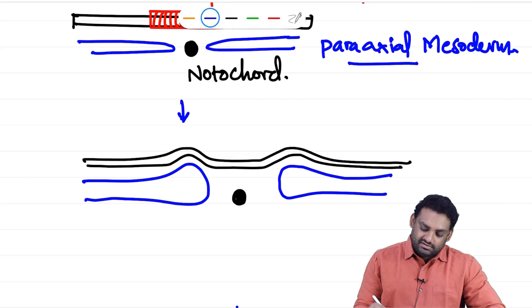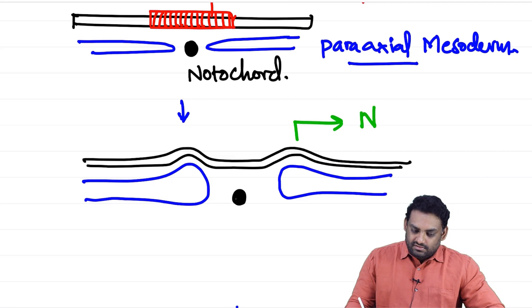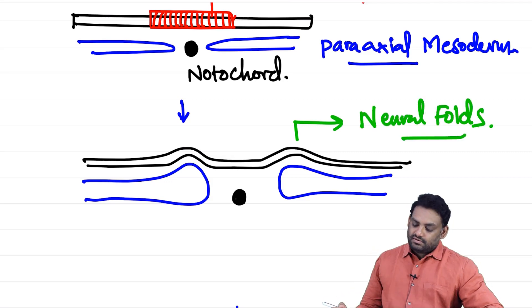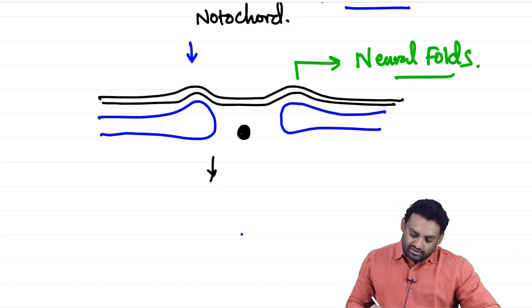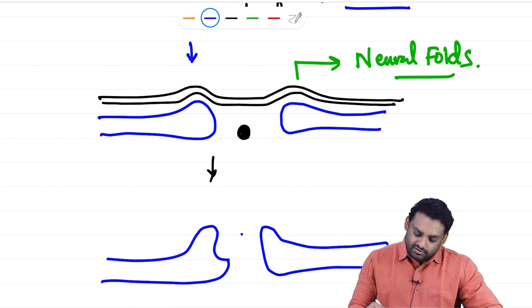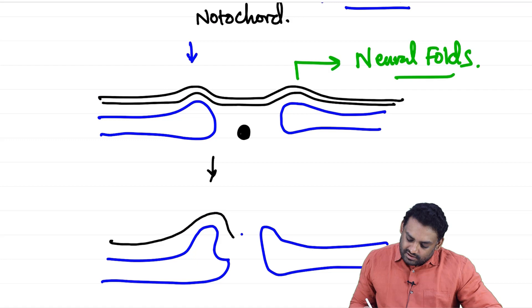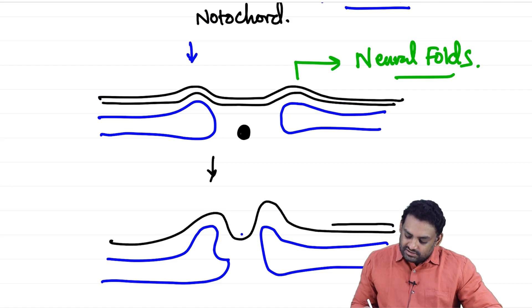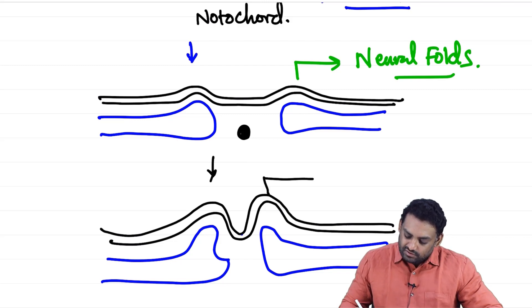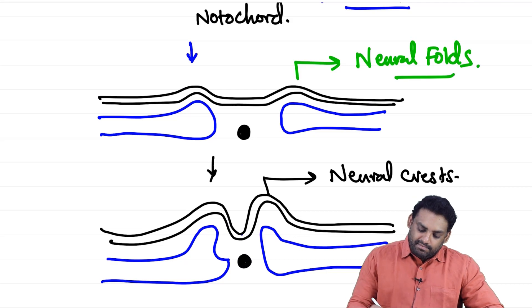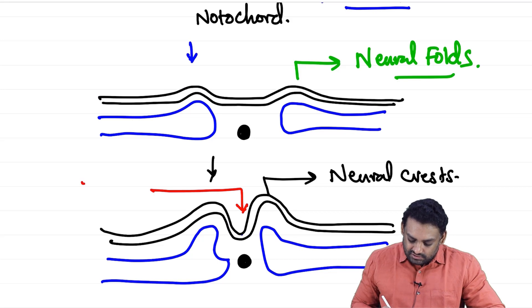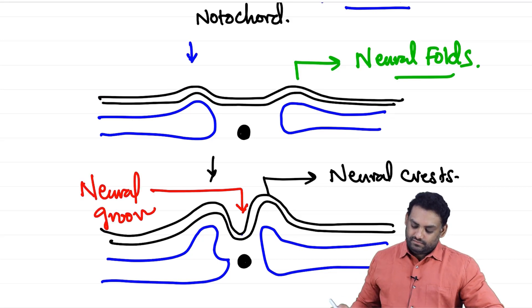The edges of the elevated ectoderm are called neural folds. As the paraxial mesoderm continues to grow, the surface ectoderm develops a depression in the center with elevations on either side. These elevations are called neural crests, and the depressed part in between is called the neural groove.